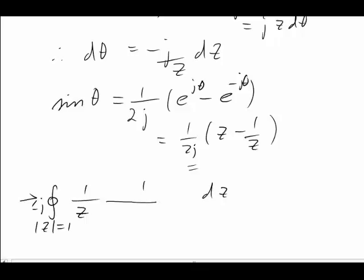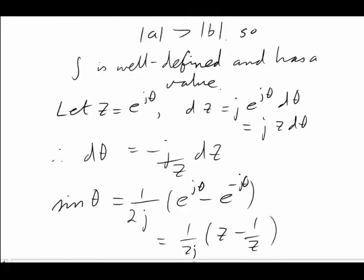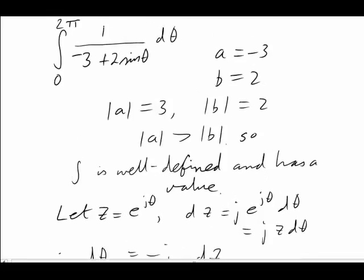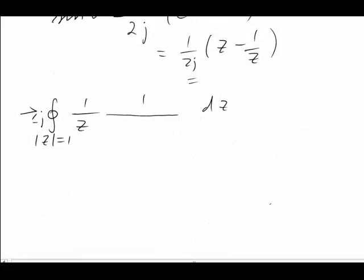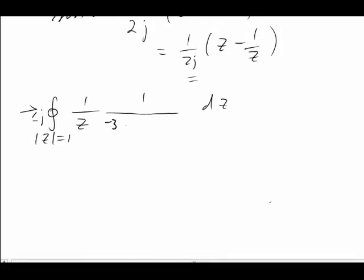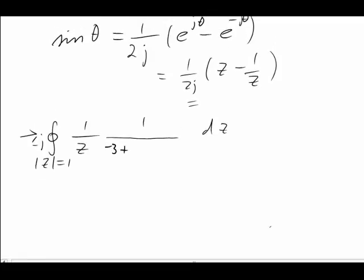There'll be our usual minus j at the front, and 1 over z inside as usual, dz. And then there'll be 1 over, remember it was negative 3 plus 2 sine theta. So it's negative 3 plus, 2 times sine theta will cancel the half. That will leave just 1 over j into z minus 1 on z.